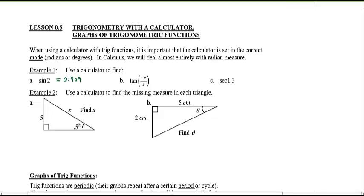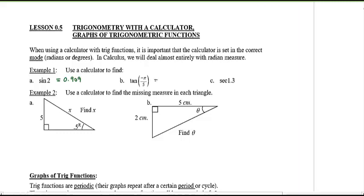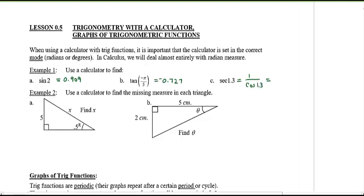Next: tangent of negative pi divided by 5 gives negative 0.727. Then secant — remember secant is 1 over cosine — so it's 1 divided by cos(1.3). Put brackets carefully: 1 divided by cos(1.3) gives 3.738. That's your value.